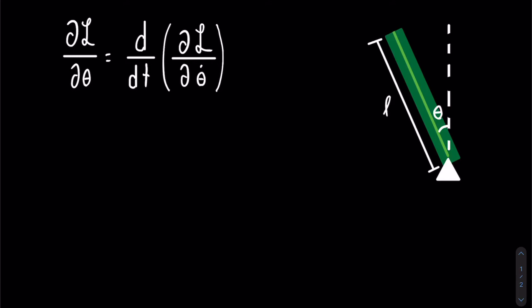The first thing we do to get the Lagrangian is find the kinetic energy. The stick is rotating about a pivot, so it will have rotational kinetic energy. The equation for this is one-half I omega squared, where I is the moment of inertia and omega is the angular velocity.